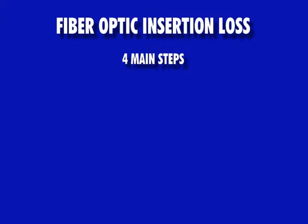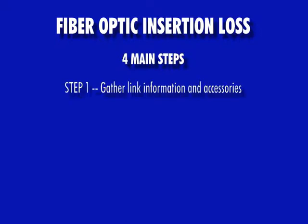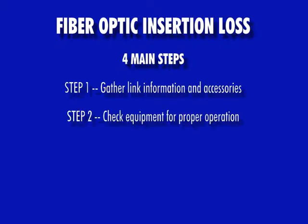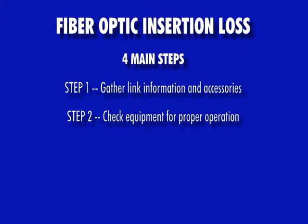There are four main steps in the process of measuring insertion loss of any fiber optic link. These steps are: gathering link information and accessories, checking the equipment and accessories for proper operation, setting an optical reference (also called zeroing), and then taking insertion loss measurements.